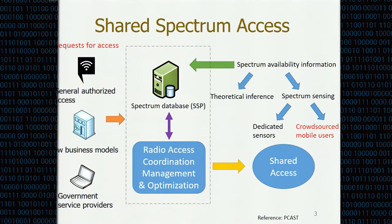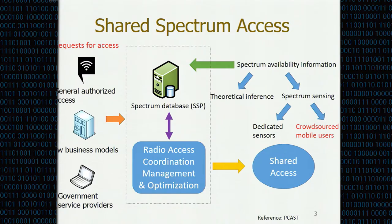Shared spectrum access is becoming one of the key paradigms to alleviate spectrum shortage. In this framework, we have the spectrum database provider, short as SSP, coordinating and providing shared spectrum access to multiple parties, referred to as secondary users, or SU. The basic idea is that whenever the SSP knows some spectrum is vacated for utilization based on spectrum availability information, it can dynamically assign those spectrums to unlicensed parties for short-term usage.